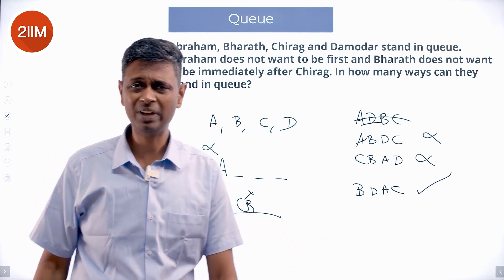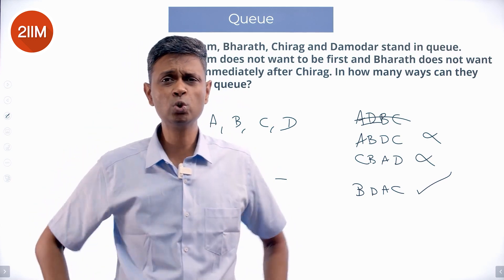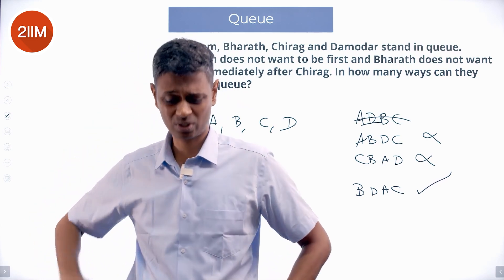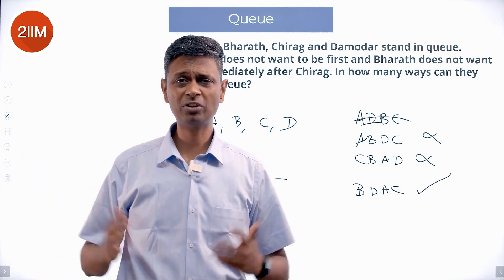In how many ways can they stand in a queue? Very simple. We are going to do what is called brute force counting, my favorite method of counting. What is brute force? I will write everything, just take a big bazooka. No mathematics, no fancy formula, nothing.